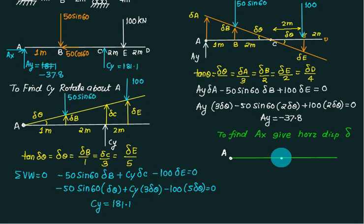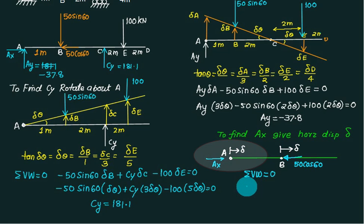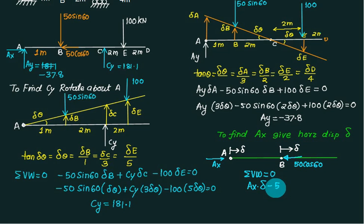Identify how many points in the main figure have horizontal forces — one is point A and one is point B, that's all. Imagine the beam: if you push it horizontally, then this point will also push by the same distance. Show the forces — there is no tan theta, only delta. This delta equals A_X and the other equals 50 cos 60. Applying virtual work: A_X times delta is a positive combination and 50 cos 60 times delta is a negative combination. Delta cancels out, so A_X equals 25.